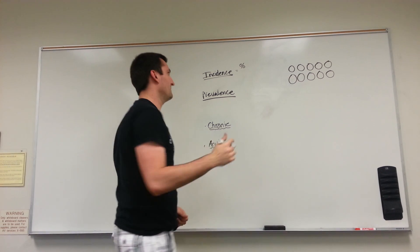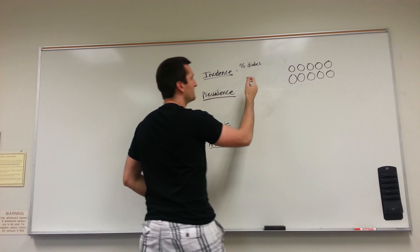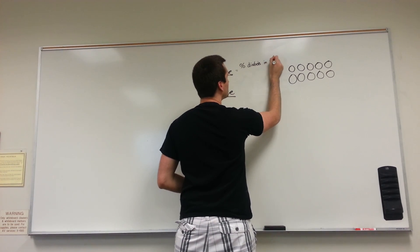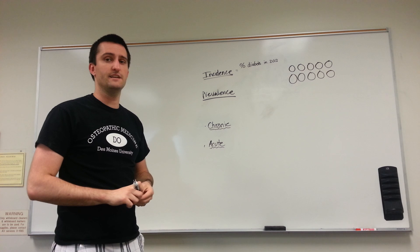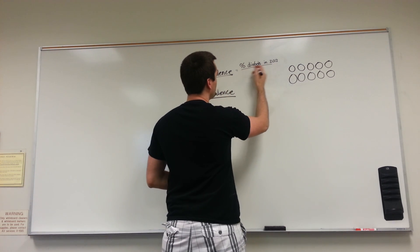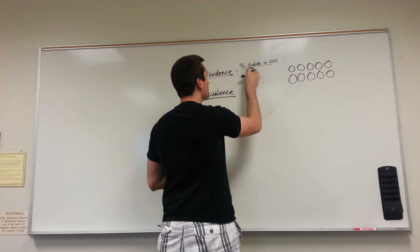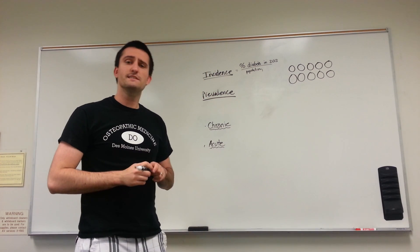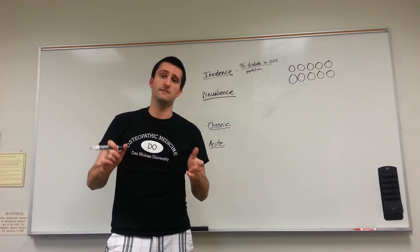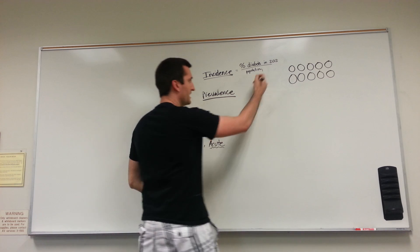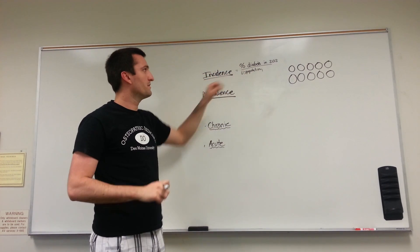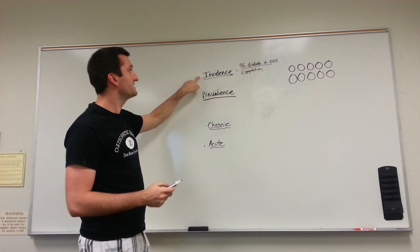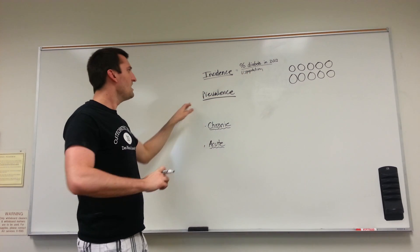Incidence is the percentage of people diagnosed with diabetes in 2013. Everyone diagnosed before 2013 is excluded — this only deals with new cases in 2013. The denominator is the total population or sample size. So if we ask: what's the incidence of people diagnosed with diabetes in 2013 in the United States? The US population is our denominator, and the percentage newly diagnosed that year is the incidence of diabetes in 2013.